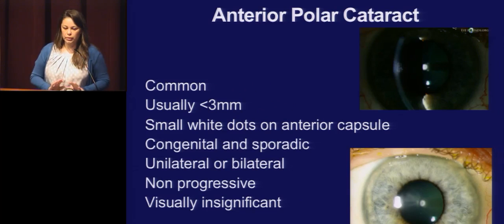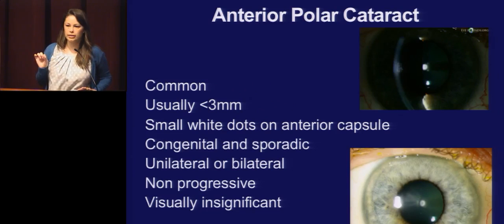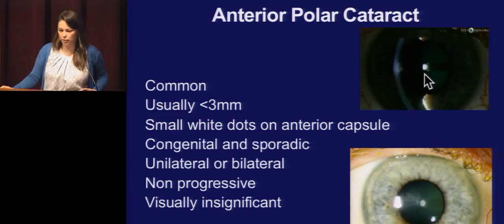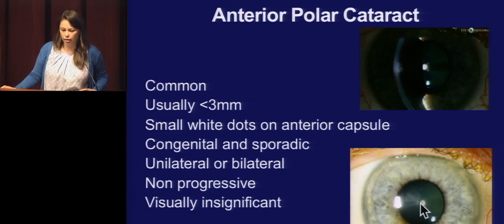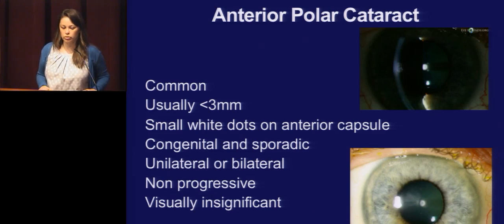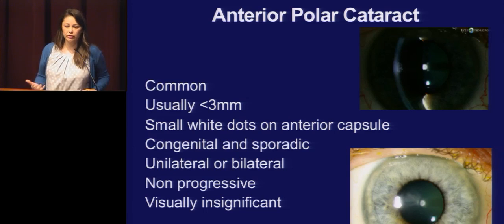The anterior polar cataract is pretty common. It's usually really small, less than three millimeters — a lot that I see are one to two millimeters. They're just little small dots on the anterior capsule. They can be in one or both eyes and are usually not progressive.